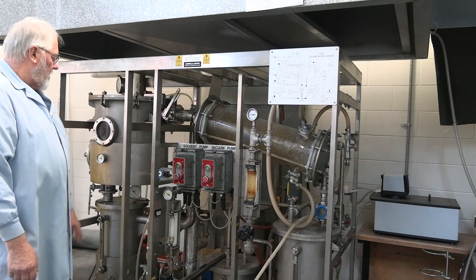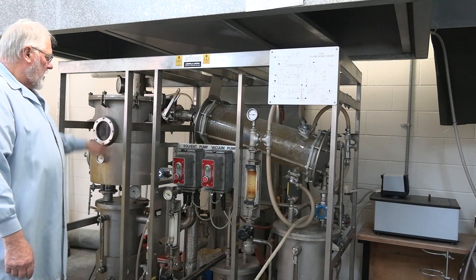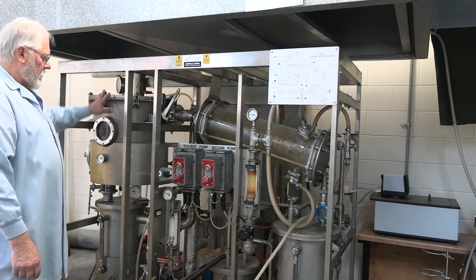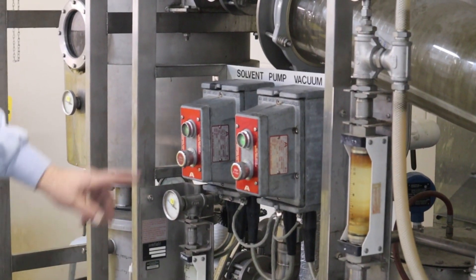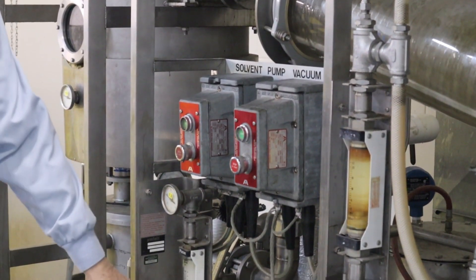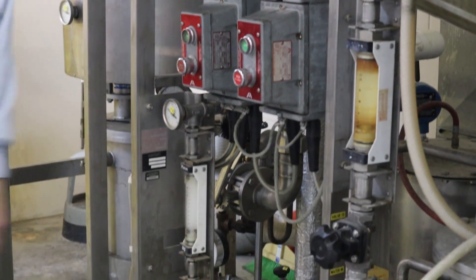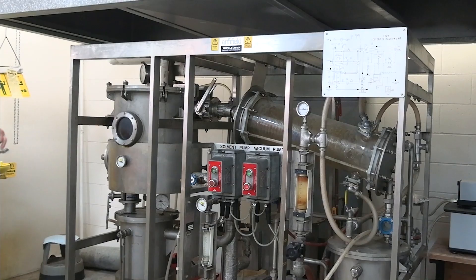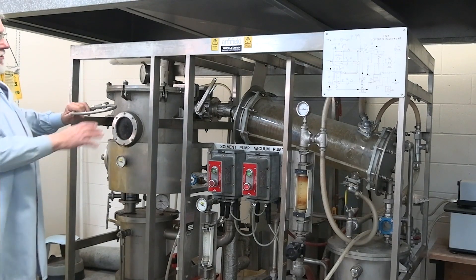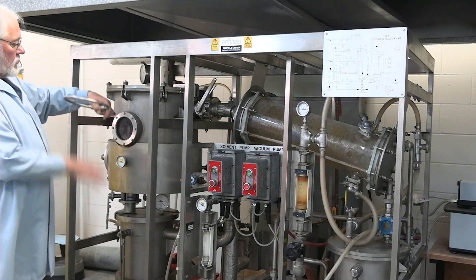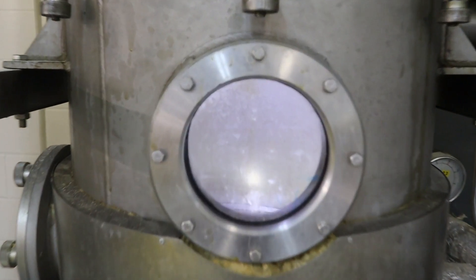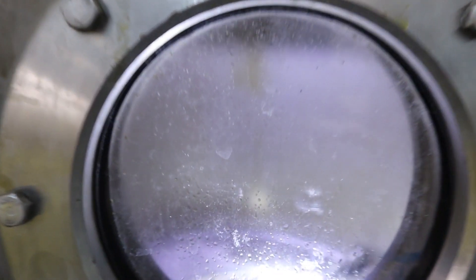The next step in the process would be once your flakes are inside of here and it's closed up, we will turn on the pump and adjust this accordingly about halfway. There's a spray ring that goes in the top of this extractor. Solvent is sprayed through nozzles down over the flakes inside of here.